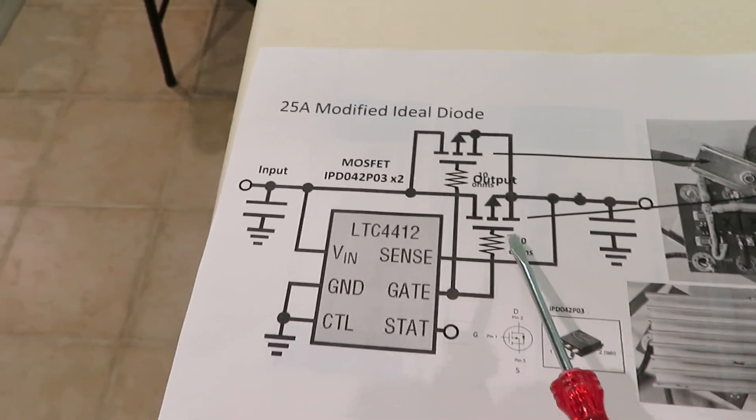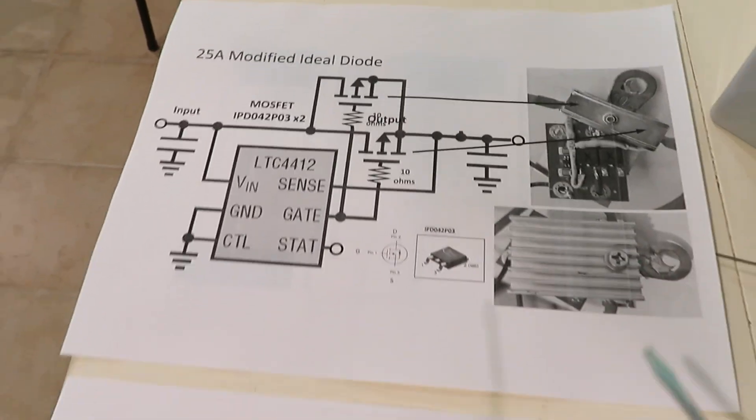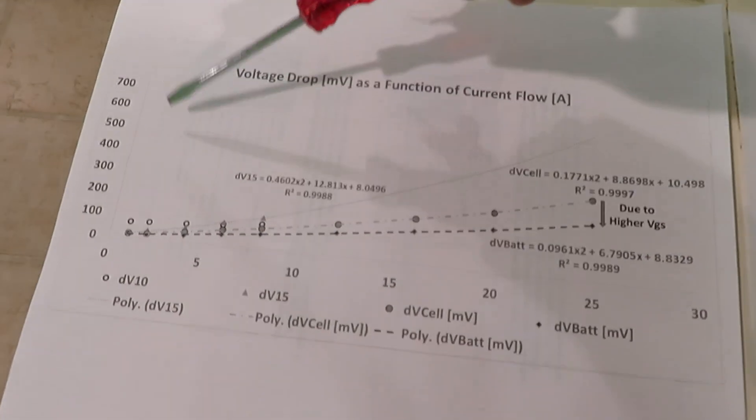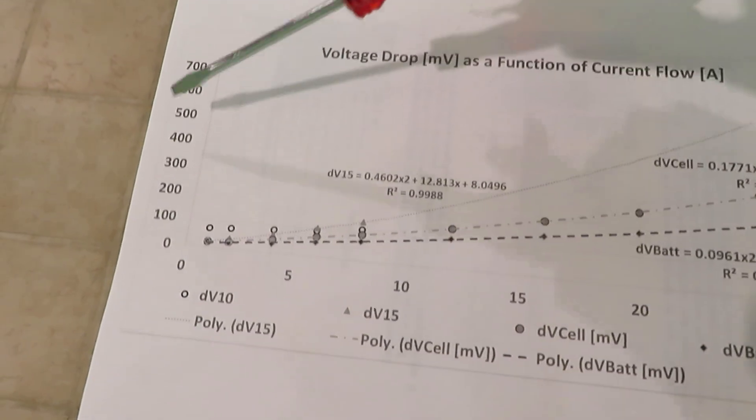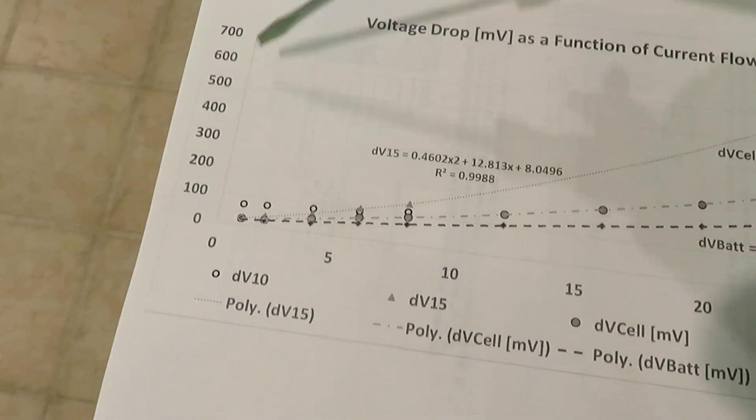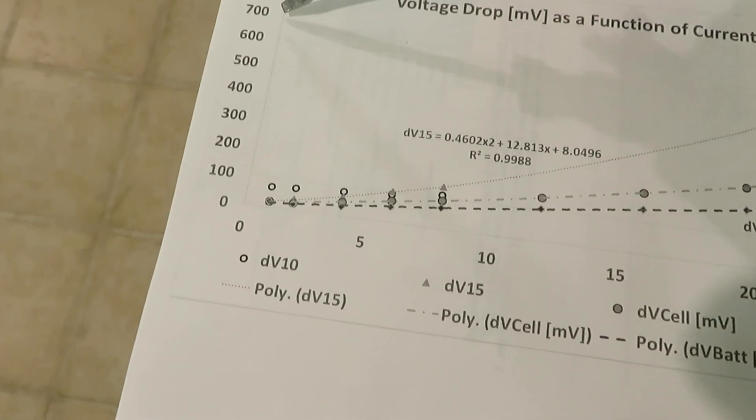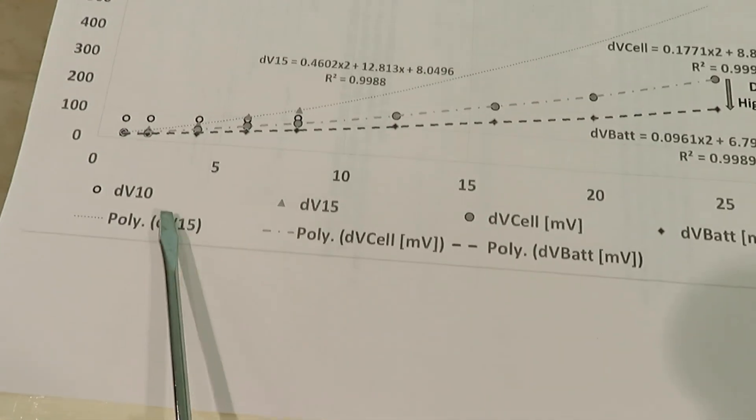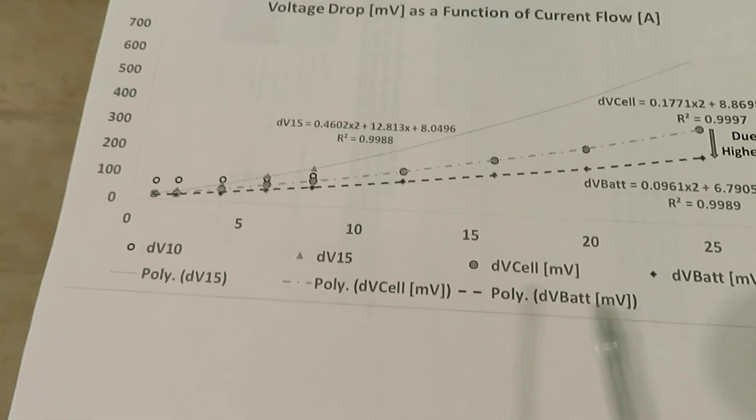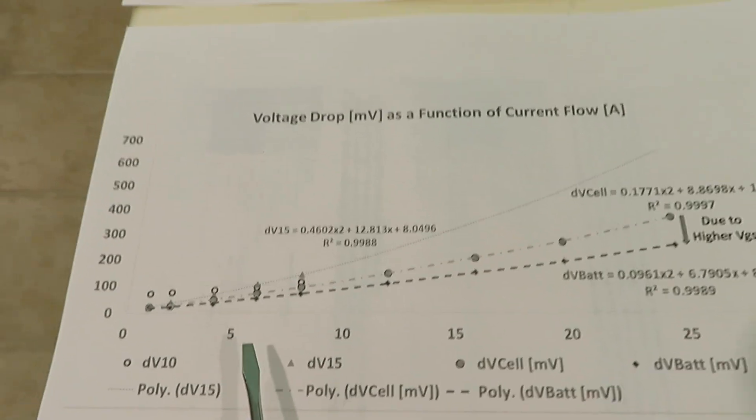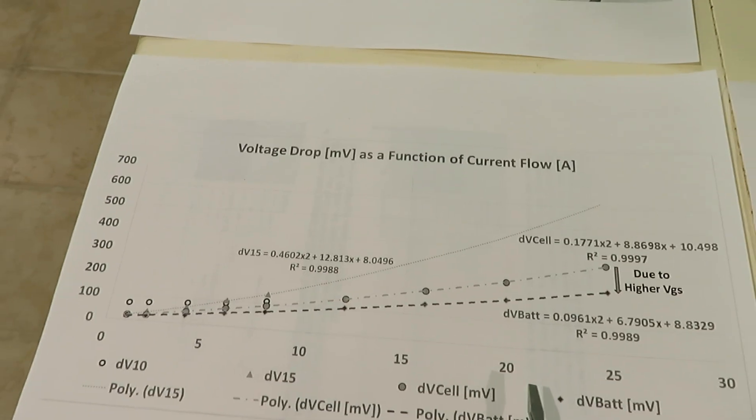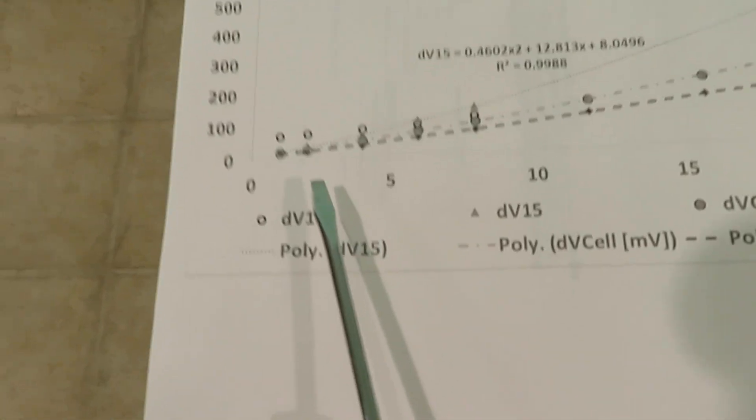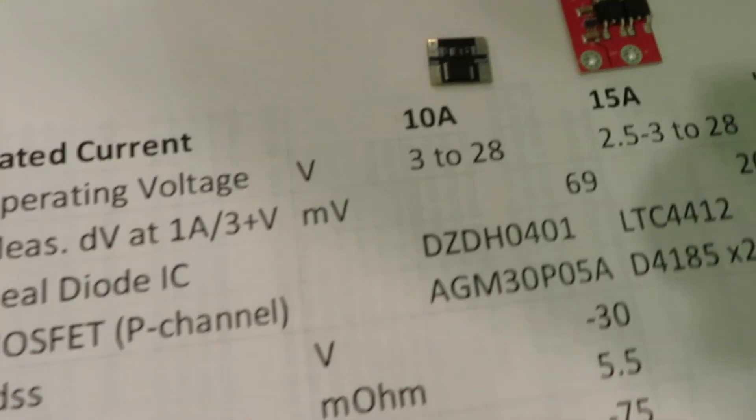The vertical axis is the voltage drop in millivolts, so 100 millivolt all the way to 700 millivolt. The horizontal axis is the current that goes through the diode: 0, 5, 10, 15, 20, 25. 25 is what I need.